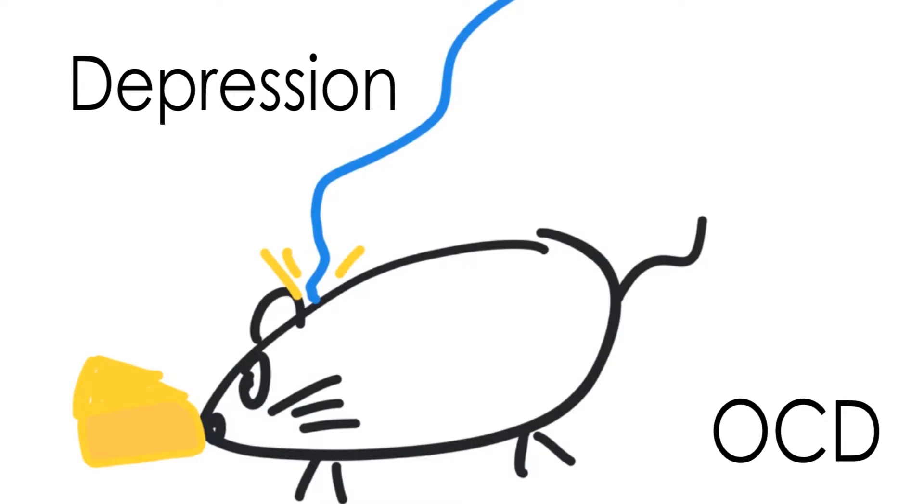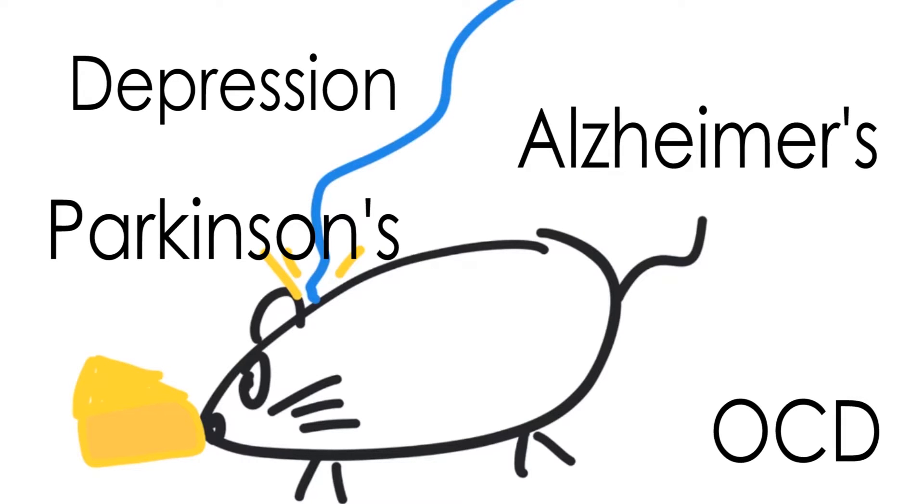or would allow scientists to develop more specific drugs to treat neurological disorders like Alzheimer's or Parkinson's. Ultimately, optogenetics represents a new and innovative way of learning about the brain and treating brain disorders.